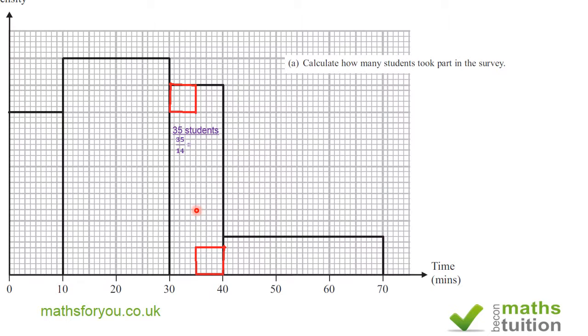So in this section there are 14 unit areas, so if you divide 35 by 14 you end up with 2.5. So one unit area is equivalent to 2.5 students. Now that being the case for this section which would have 12 unit areas, the number of students would be 12 times 2.5 and that's 30 students.